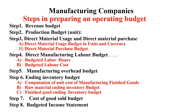Operating budget for a manufacturing company involves many steps. The manufacturing company requires a lot of steps to make it happen: revenue budget, production budget, direct material usage and direct material purchase, direct manufactured labor, manufacturing overhead, ending inventory budget, cost of goods sold budget, and budgeted income statement.